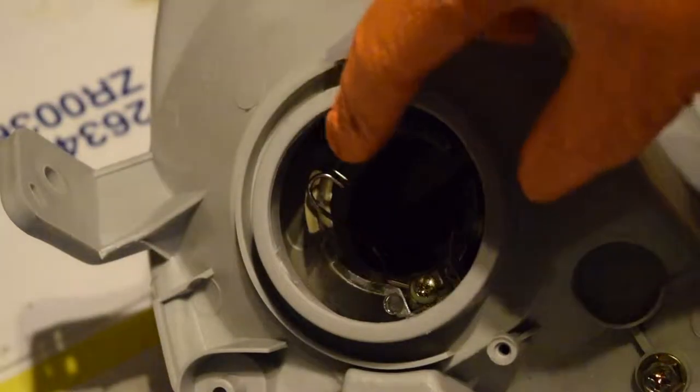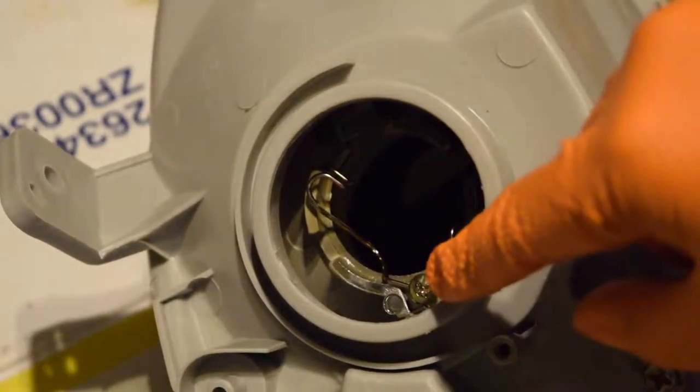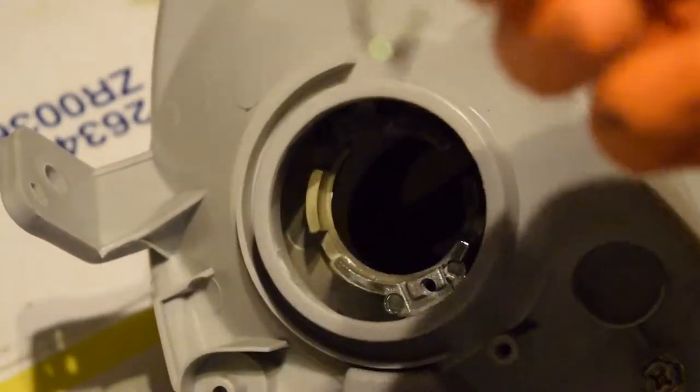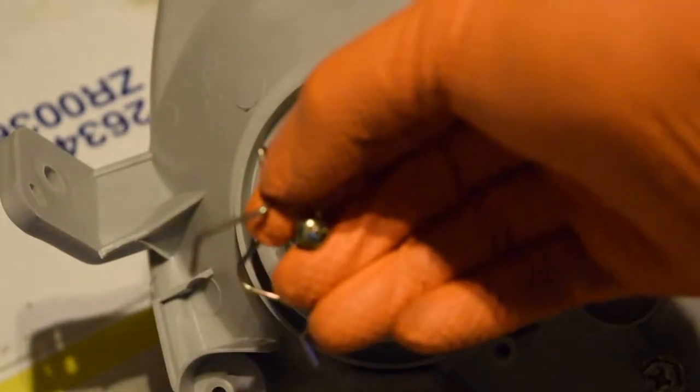For the new headlight you're going to want to remove this screw right here and take out this piece that basically holds in your bulb. You won't be needing that anymore since you're doing a retrofit. It's very simple. It's just a Phillips head.